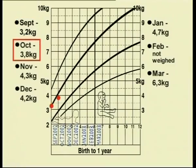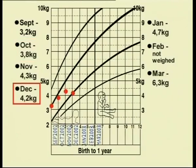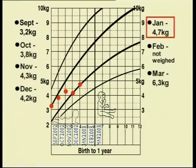Then after one month, she weighed 3.8 kilograms — that's this point. And after two months, she weighed 4.3. Then at three months, she weighed 4.2. Notice she lost about 100 grams over this month — perhaps she was sick. Anyway, in January she weighed 4.7, and in March, 6.3 kilograms.